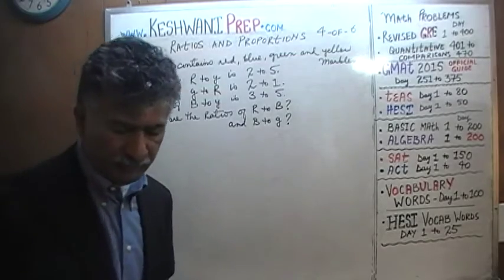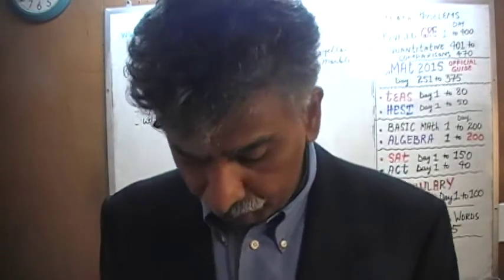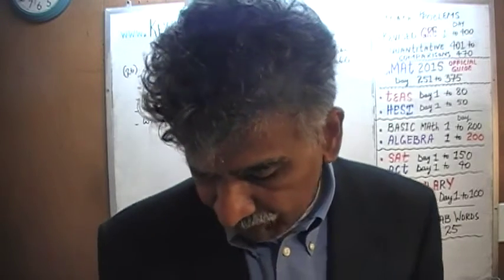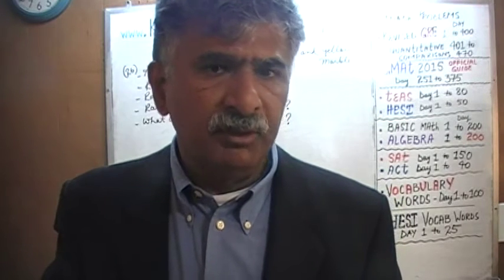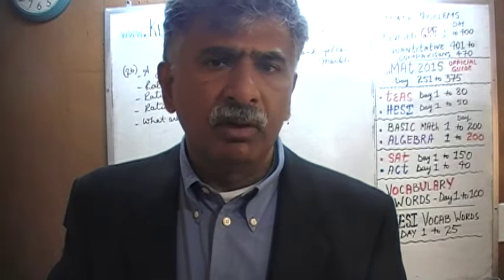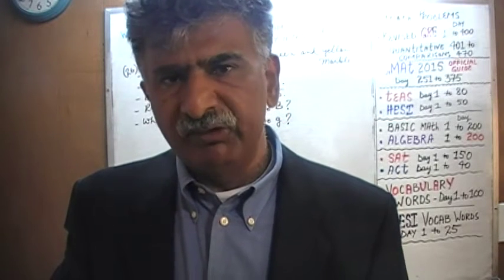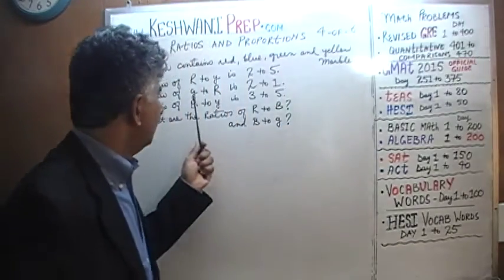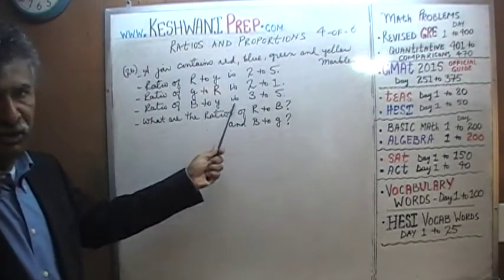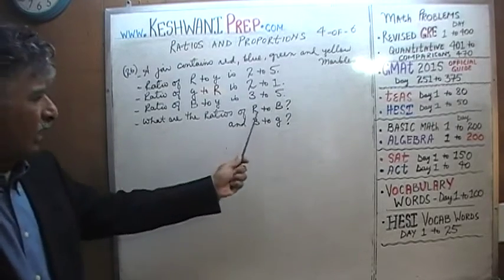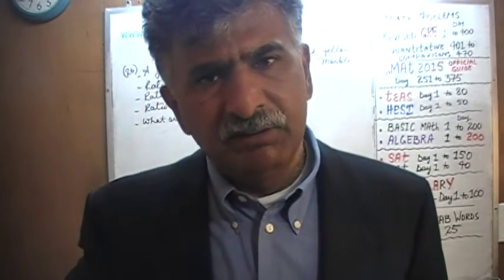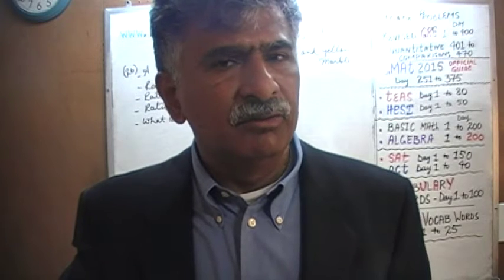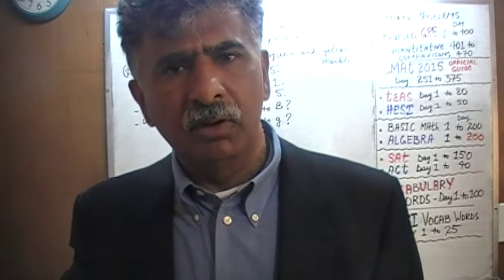In the real exam they're only going to ask for one ratio, and they'll present the question in a more sophisticated way. Instead of talking about red, blue, green, and yellow marbles, when this question appeared on the actual exam it was about a school with four classes — freshmen, sophomores, juniors, and seniors — giving different ratios and asking for one ratio at the end. But the concept and methodology don't change.